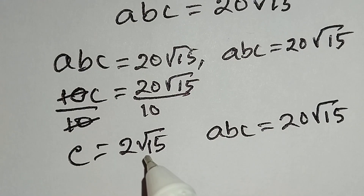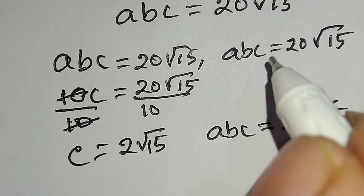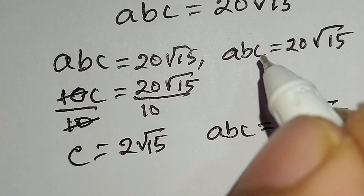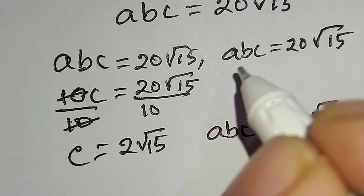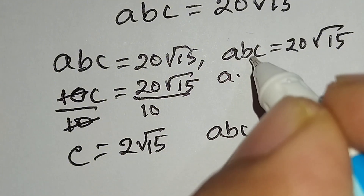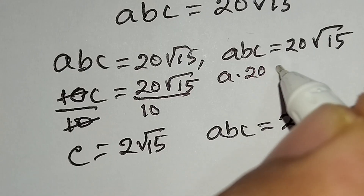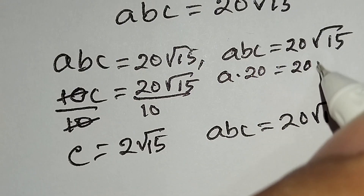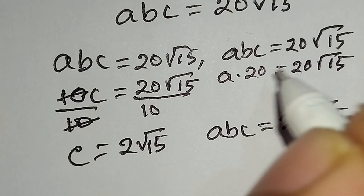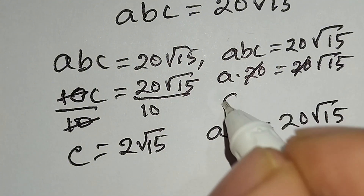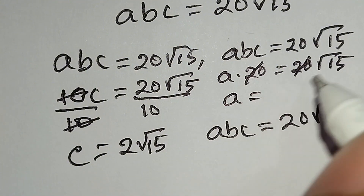The value of c is 2√15. From equation number two, BC equals 20. So we write a times 20 equals 20√15. The 20s cancel out, so a is equal to √15.